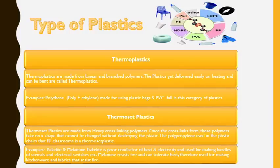Some other examples of thermoset plastics are bakelite and melamine. Bakelite is a poor conductor of heat and electricity and is used for making handles of various cooking utensils. Since it is also a poor conductor of electricity, it is used for making electrical switches, plugs, wires, and so many other things.